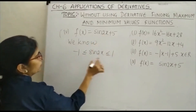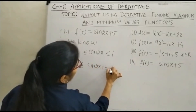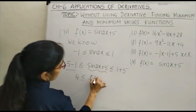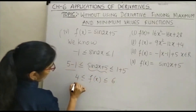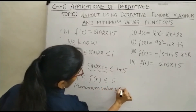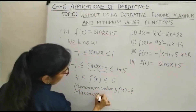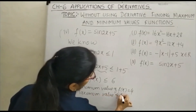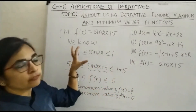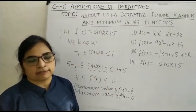For our function f(x) = sin(2x) + 5, just add 5 throughout: -1 + 5 ≤ sin(2x) + 5 ≤ 1 + 5, giving 4 ≤ f(x) ≤ 6. So minimum value of f(x) = 4 and maximum value of f(x) = 6. In all these 4 different types of questions, we have not made use of the derivative for finding the maximum and minimum value. Thank you.